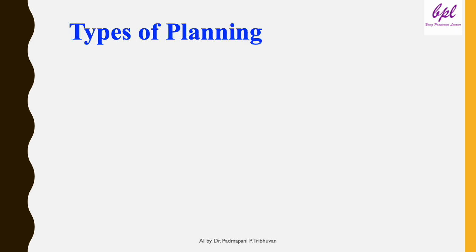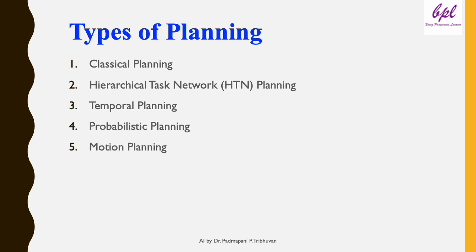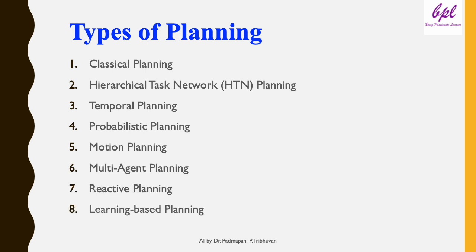Let's now discuss types of planning. AI planning is categorized based on certainty, the nature of the environment, temporal constraints, and complexity. The types of planning include: classical planning, hierarchical task network planning, temporal planning, probabilistic planning, motion planning, multi-agent planning, reactive planning, and learning-based planning. Let's explore each type in detail.